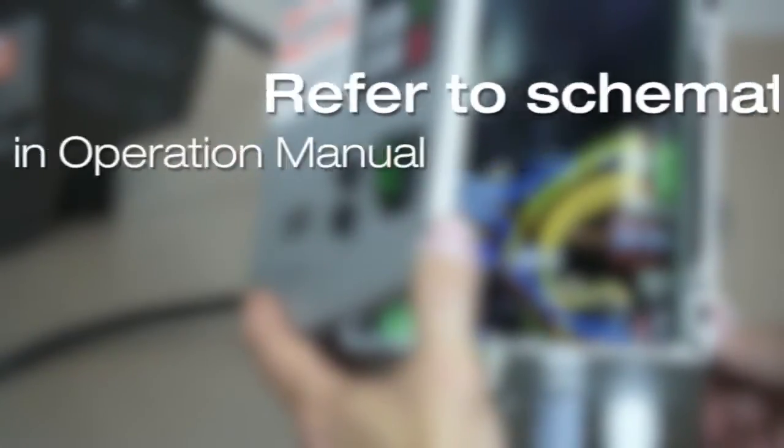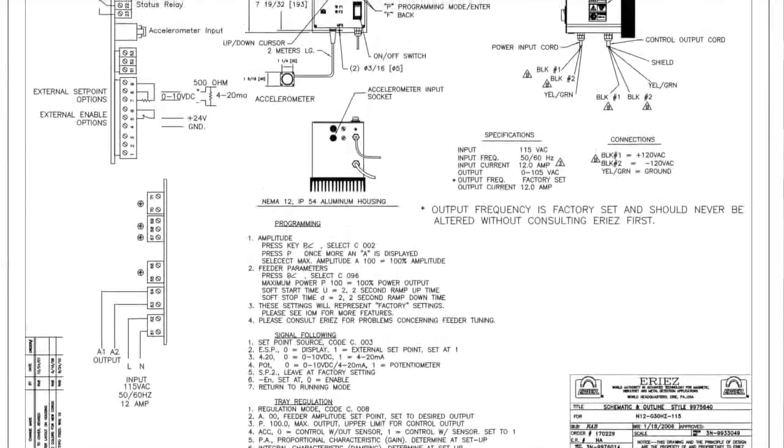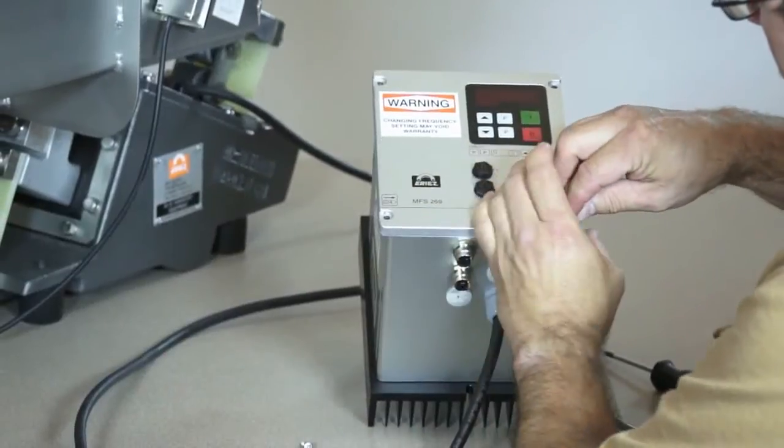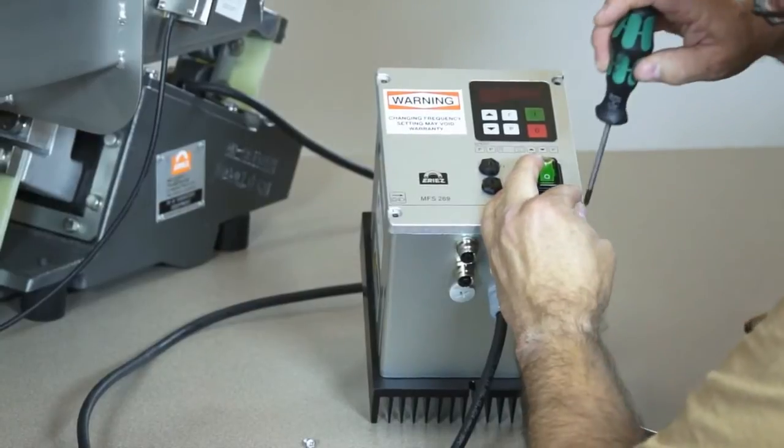Refer to the schematic at the end of the operations manual. Tinning the conductors or a ferrule will make inserting the wires easier. Now we can reattach the cover.